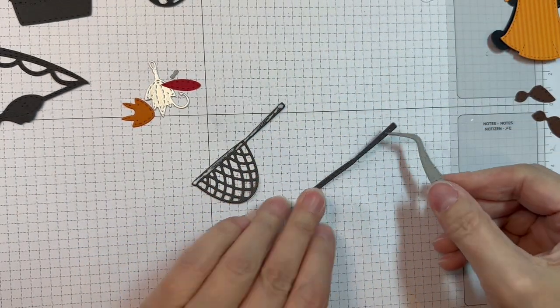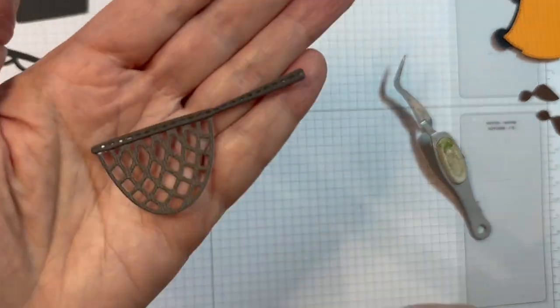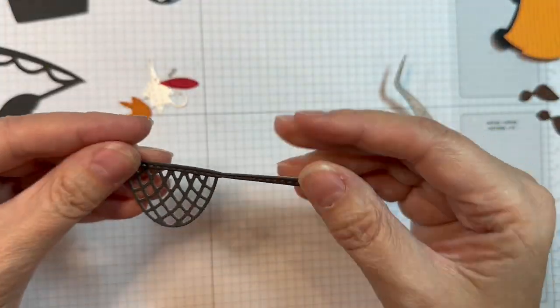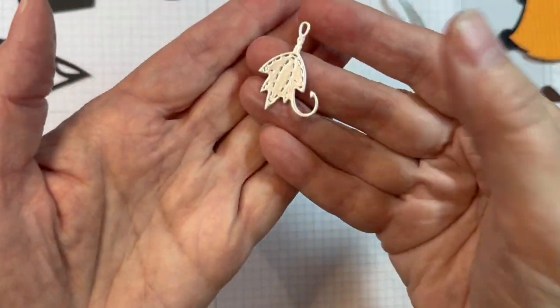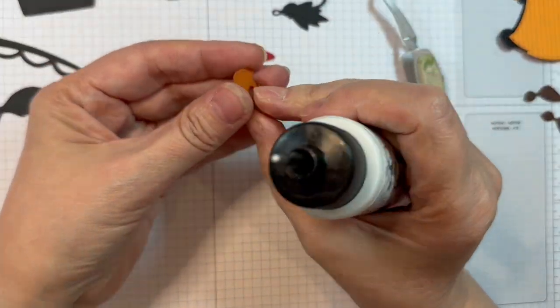Now I'm putting together this little fishing net cut first out of the gingham linen from Doodlebug, the black. I use the gingham side. There we go. And then, or the linen side, sorry guys. And then the little part on the top, the handle was cut from smoky shadow paper tray ink.